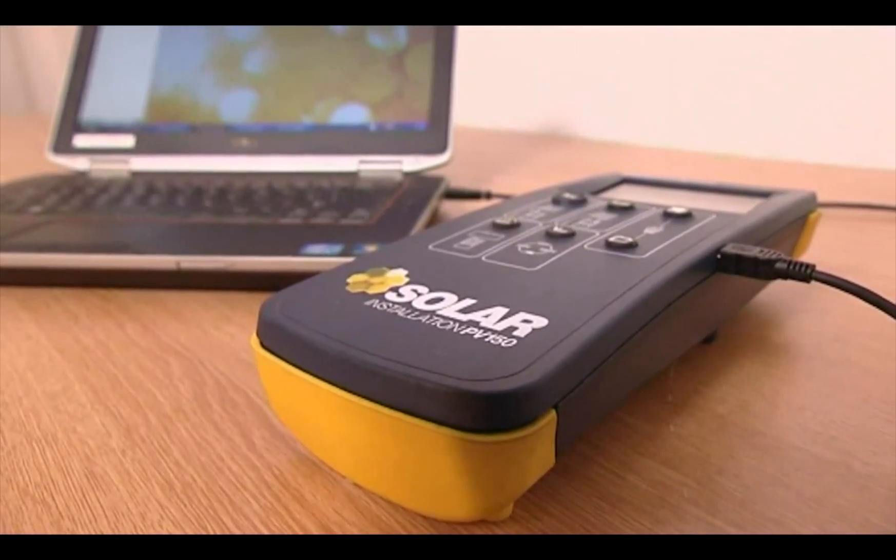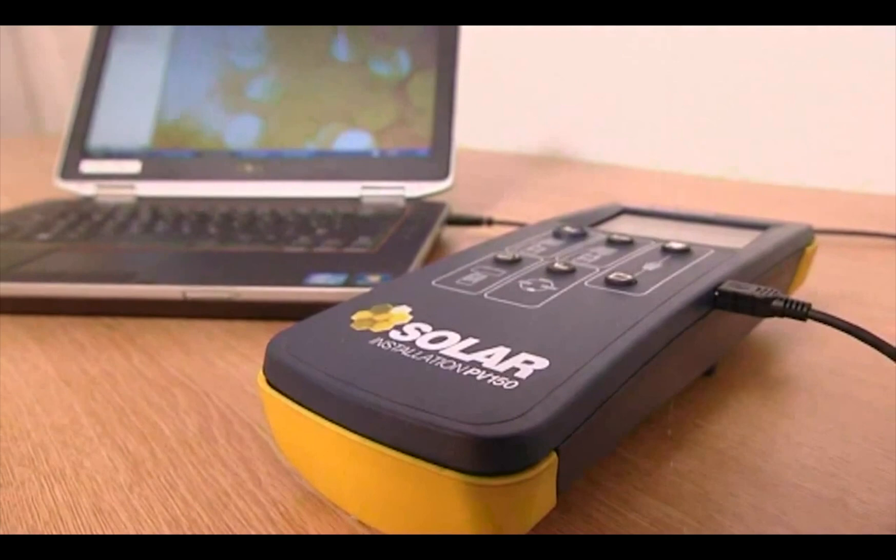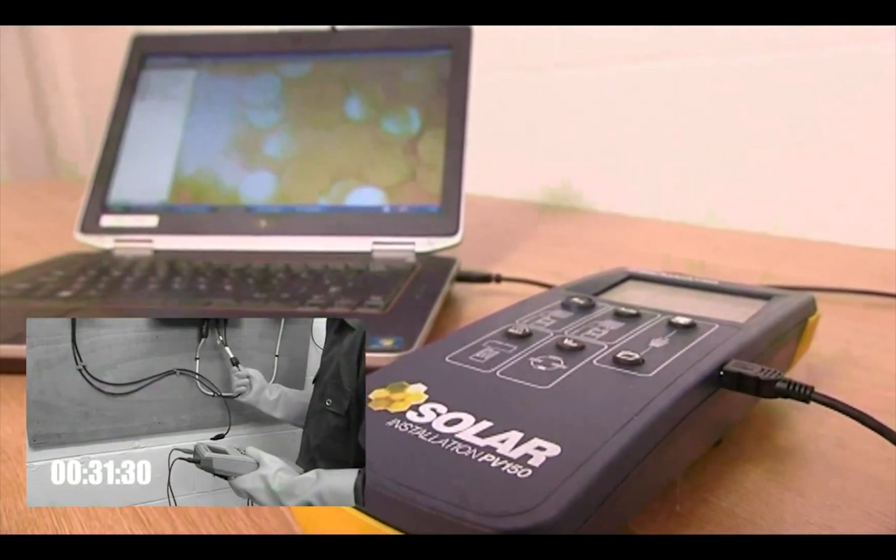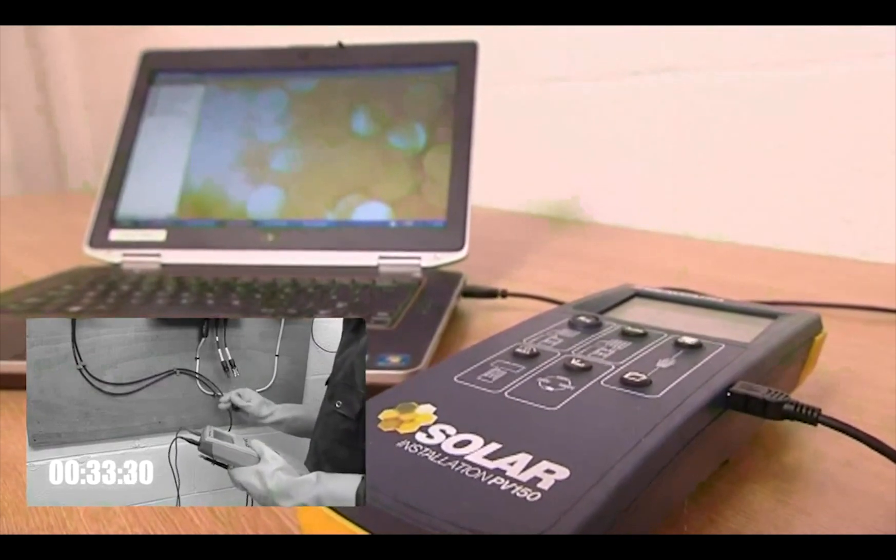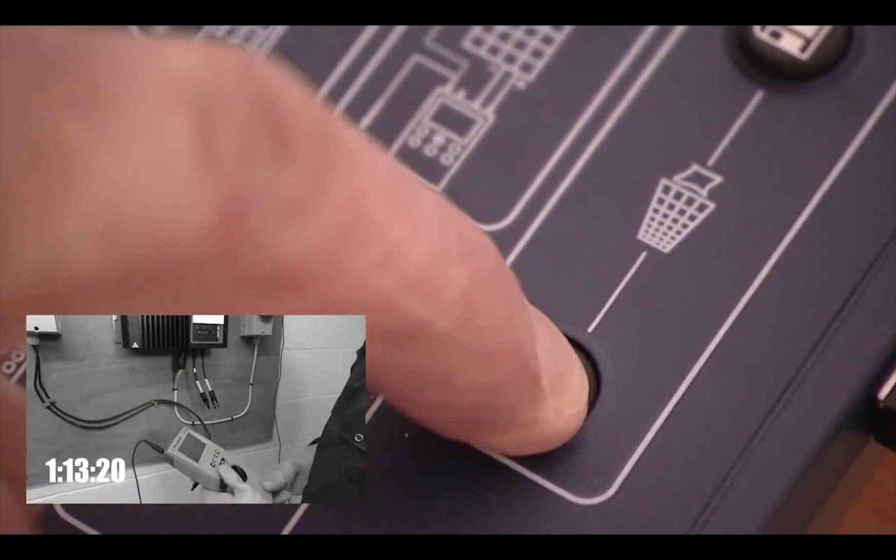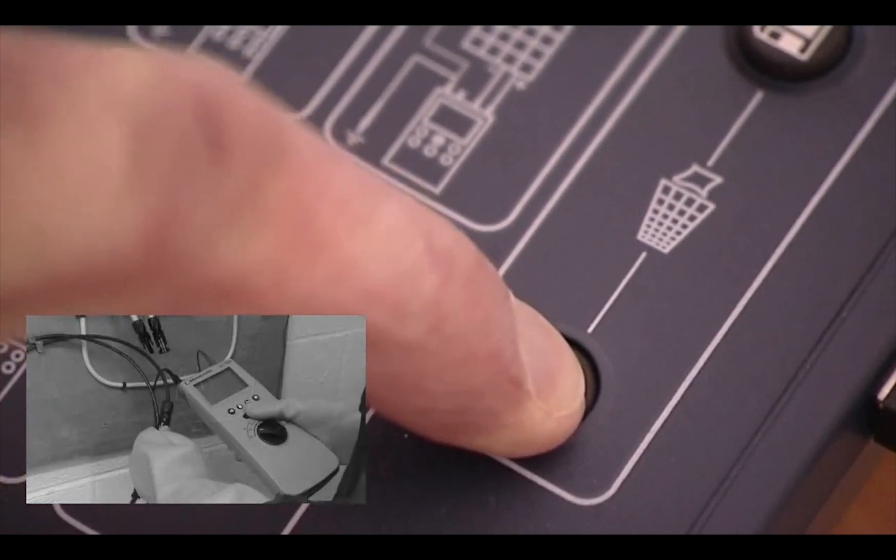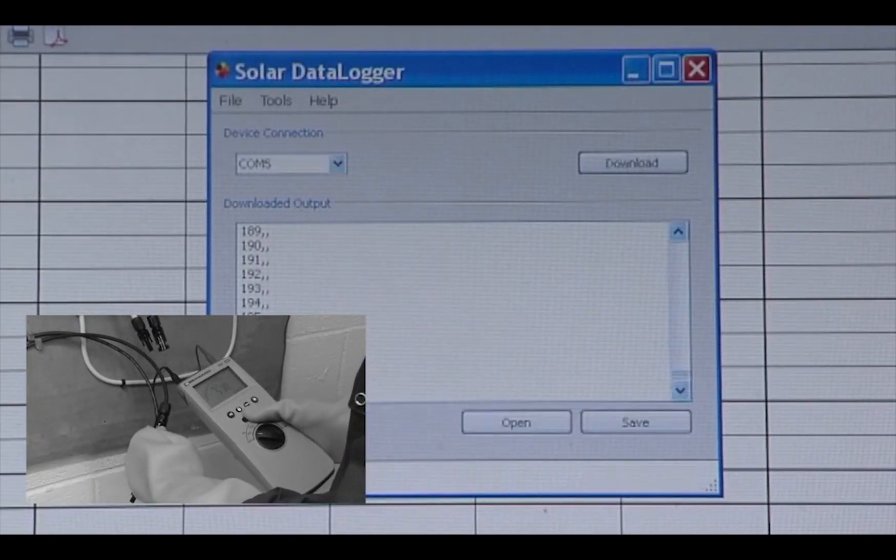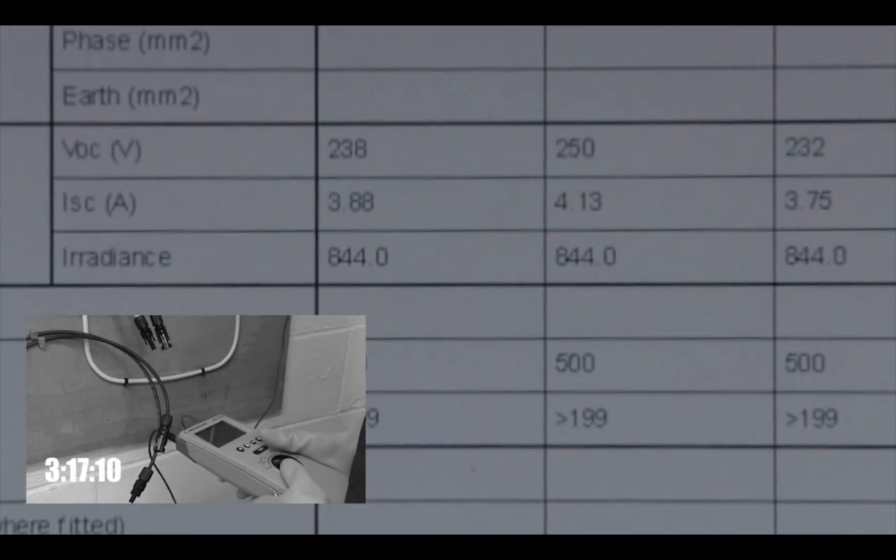You can download the test results to a PC then import them using the SolarCert elements software. Testing the traditional way we have the insulation resistance test still to do. Hold the review key on the PV150 and download the results. These can be imported into reports. They can also be printed or saved as a PDF.